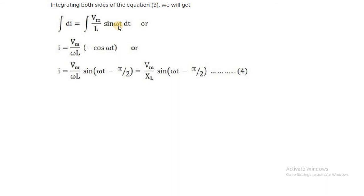If voltage is at sin omega t, it means voltage is at the reference position — the voltage waveform starts its positive half cycle at omega t equal to 0. If the current equation has a phase angle of negative pi by 2, the current is in a lagging condition. The positive half cycle of the current waveform will start after omega t equal to 0, and after 90 degrees.